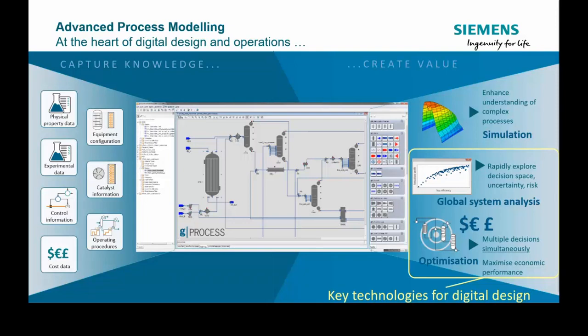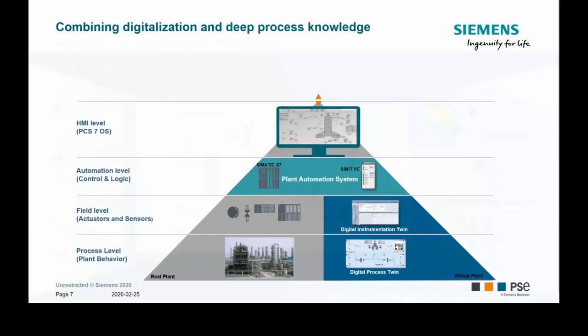These are the key elements for digital design: the global system analysis tools and optimization capability of gPROMS for designing columns, reactors, and similar units. Once this model is accurate and predictive enough, we can benefit from it also in the operations phase.